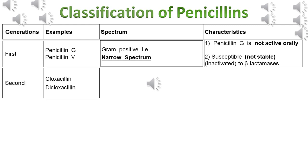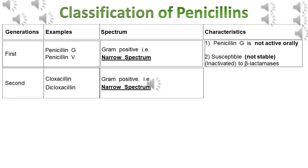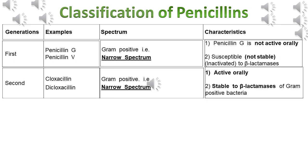Therefore, the second generation of penicillins was discovered. Examples are Cloxacillin and Dicloxacillin. Spectrum of activity is narrow spectrum — kills gram-positive bacteria. Characteristics: active orally and stable to beta-lactamases of gram-positive bacteria. The two advantages are active orally and stable to beta-lactamases. The two disadvantages are narrow spectrum — can be used for only some infections — and stable to beta-lactamases of gram-positive bacteria only.